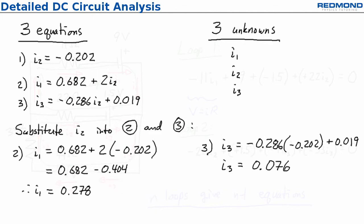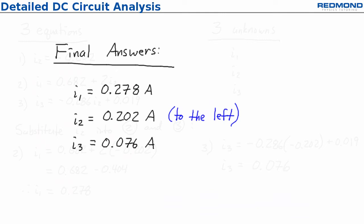Then I can substitute the value for I2 back into the expressions for I1 and I3, and I just need to carefully substitute negative 0.202 for I2 to get the right answers for I1 and I3. So my final answers are I1 is 0.278 amps, I2 is 0.202 amps but it's to the left, and I3 is 0.076 amps.